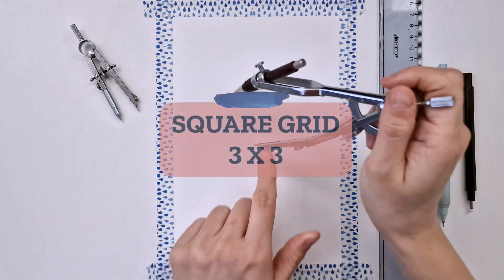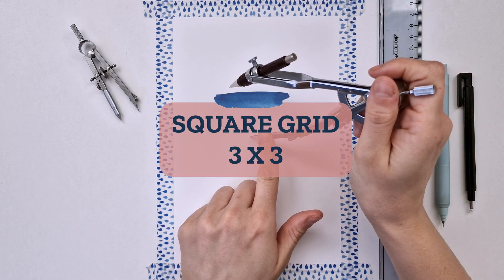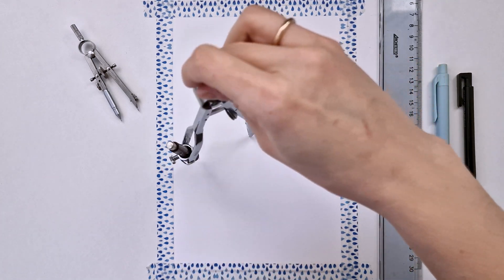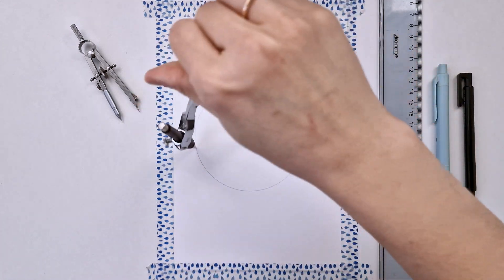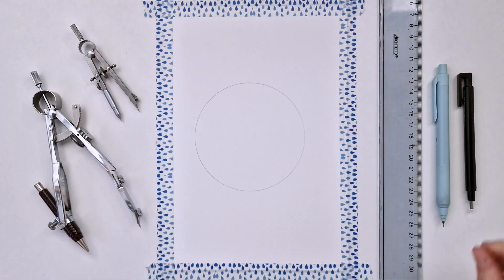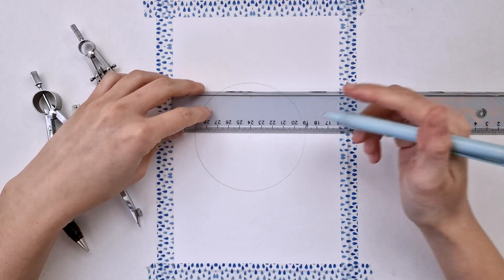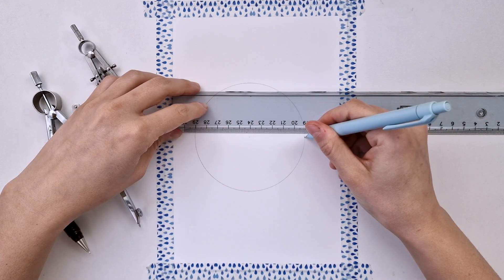Hello everyone, today we're going to learn how to create this square grid, three by three. Let's start with our circle. I'm using a five centimeter radius, and as always...